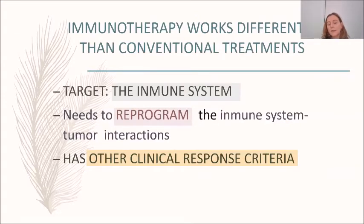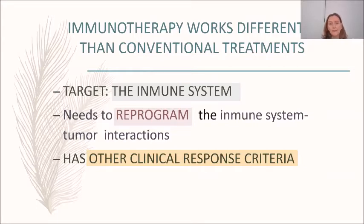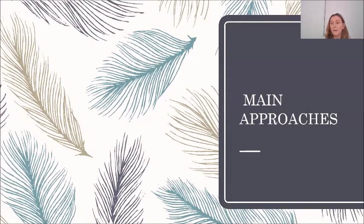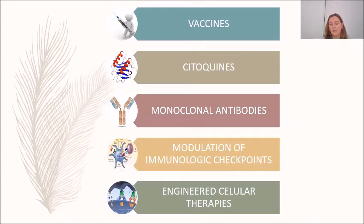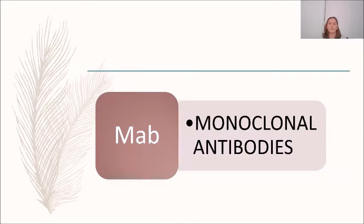Immunotherapy works differently from conventional treatments such as chemotherapy or radiotherapy. Here the target is the immune system, not the tumor cell. Immunotherapy needs to reprogram immune system-tumor interactions and uses different clinical response criteria. The main approaches of immunotherapy include vaccines, cytokines, monoclonal antibodies, modulation of immunologic checkpoints, and engineered cellular therapies.